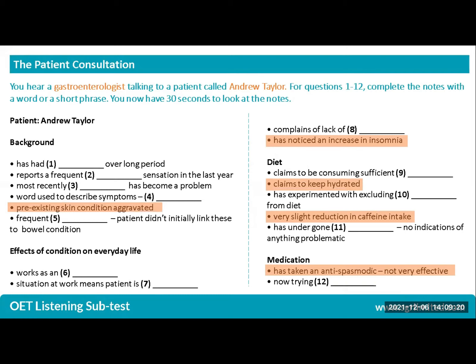We use untested information as signposting support to predict the possible answer to the upcoming gap fill question. For example, before number 5, you hear the patient speak about his medical condition first. Before number 9, he will mention insomnia. For number 10, the patient claims he is always hydrated — something to do with fluid or water. Before number 11, you will hear the word caffeine or its symptoms, synonyms, or examples. And before number 12, the patient will mention an antispasmodic medication first.